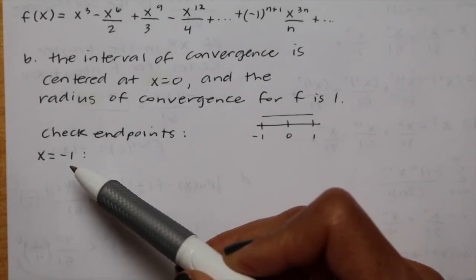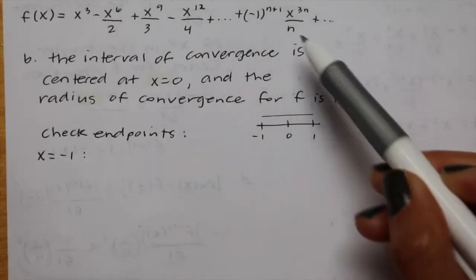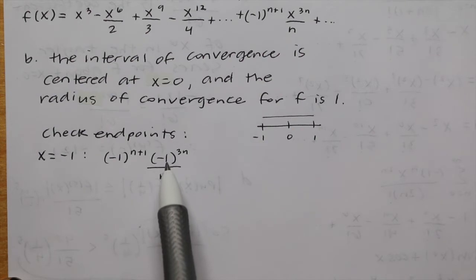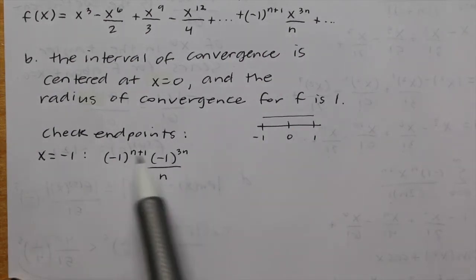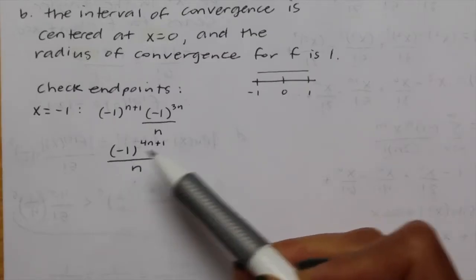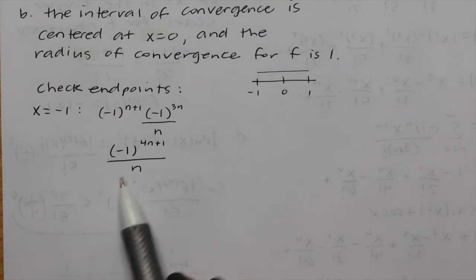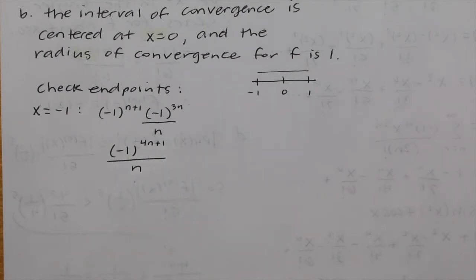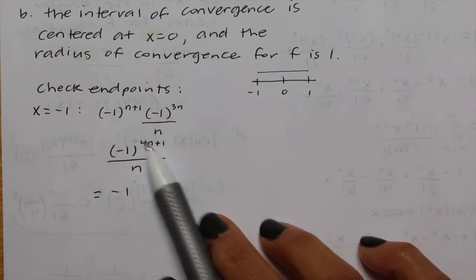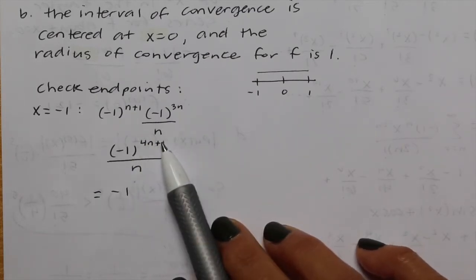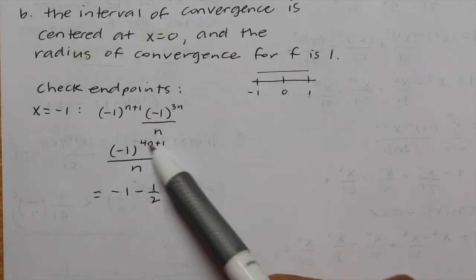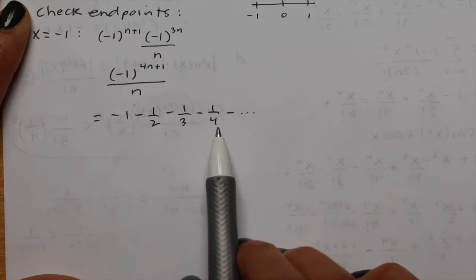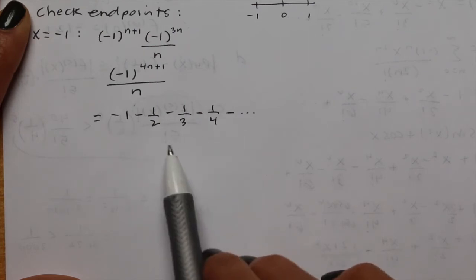Checking x equals negative 1, we plug negative 1 into the general term for f: negative 1 to the n plus 1 times negative 1 to the 3n over n. Since these share the same base and we're multiplying, we add exponents to get negative 1 to the 4n plus 1 over n. Plugging in n equals 1, 2, 3 gives terms negative 1, negative one half, negative one third — factoring out the negative leaves 1, one half, one third, one fourth, and so on. That is a harmonic series, which by definition diverges.